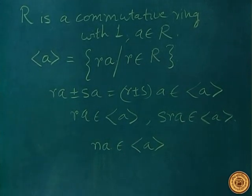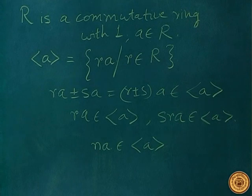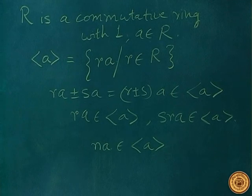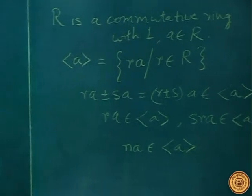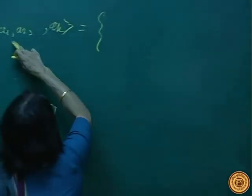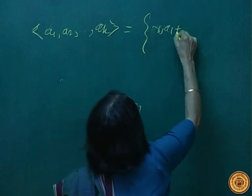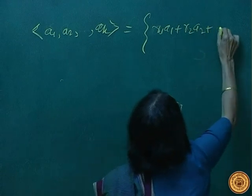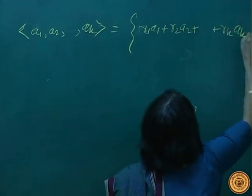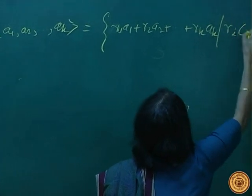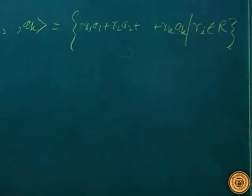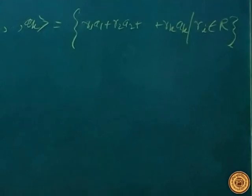More generally, if a₁, a₂, …, aₖ are elements of R, the ideal generated by them consists of elements r₁a₁ + r₂a₂ + … + rₖaₖ where all rᵢ are in R. This is also an ideal, generated by the elements a₁, a₂, …, aₖ.